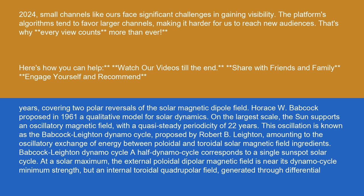On the largest scale, the sun supports an oscillatory magnetic field with a quasi-steady periodicity of 22 years. This oscillation is known as the Babcock-Leighton dynamo cycle, proposed by Robert B. Leighton, amounting to the oscillatory exchange of energy between poloidal and toroidal solar magnetic field components. A half dynamo cycle corresponds to a single sunspot solar cycle.